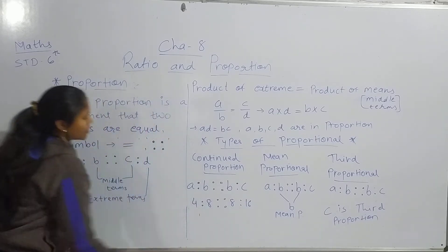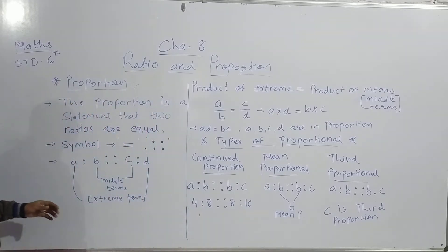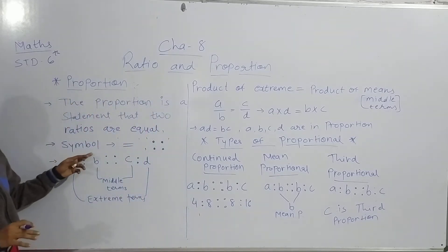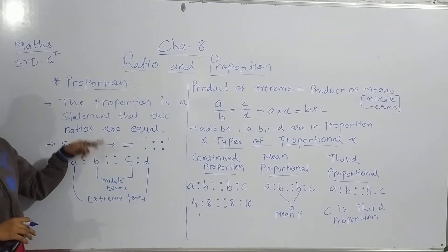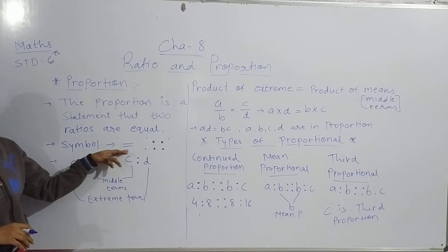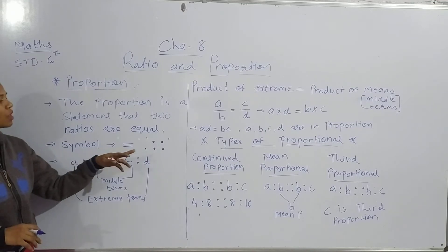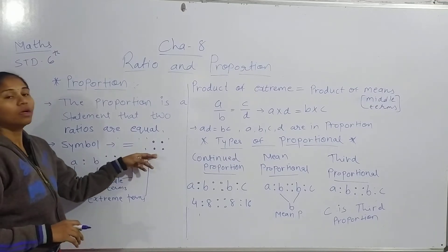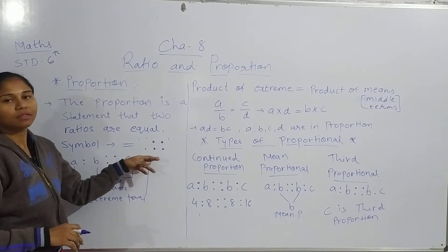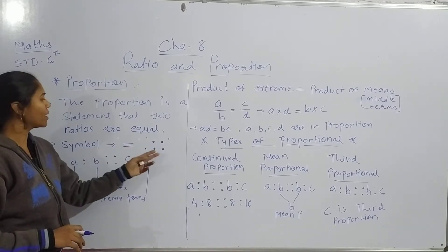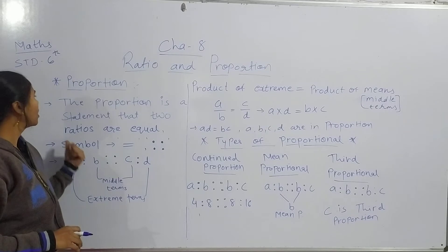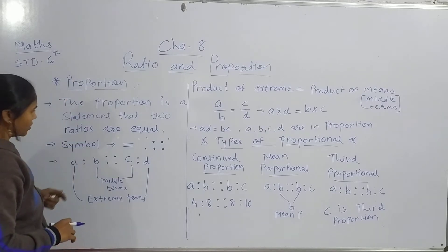Now students, the symbol of proportion is the double colon ( :: ), equal to, and indices. These two are the symbols of proportion.